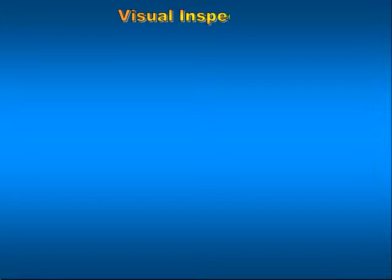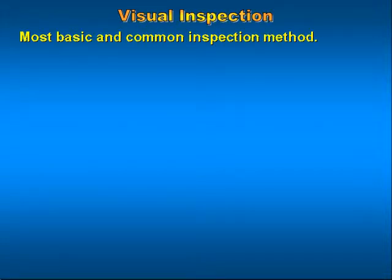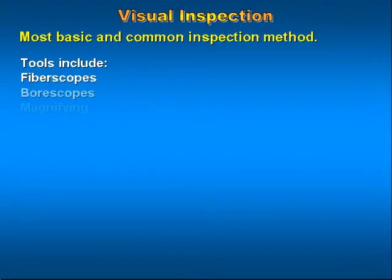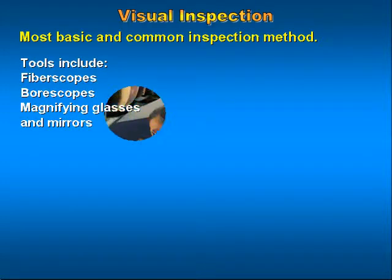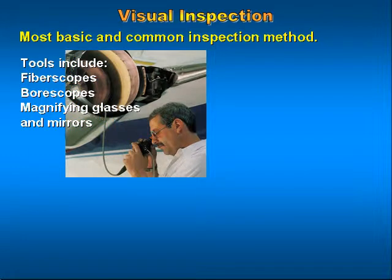Visual inspection is the most basic and common inspection method used. Tools used in the visual inspection method include fibroscopes, boroscopes, magnifying glasses, and mirrors.